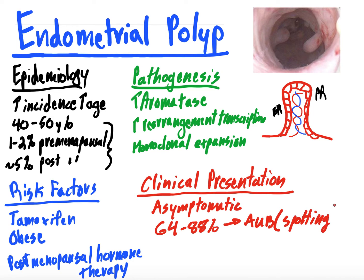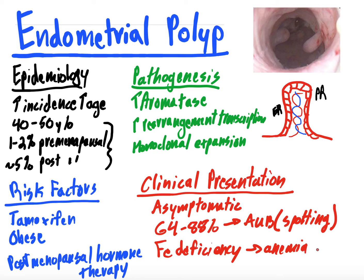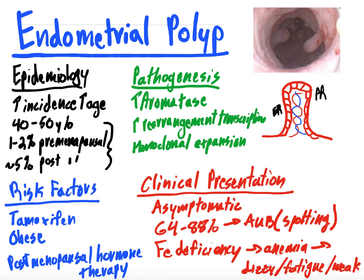It's just very light spotting between menstrual periods. Some of these patients will have iron deficiency, and because of that they can have a microcytic anemia with symptoms of dizziness, orthostasis, weakness, and fatigue. So the two big symptoms you can see are abnormal uterine bleeding — usually just spotting between periods — and symptoms concerning for anemia. But the vast majority of patients are going to be asymptomatic and it might just be an incidental diagnosis.